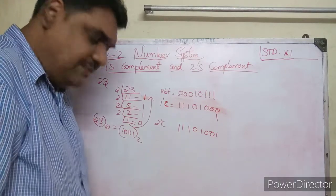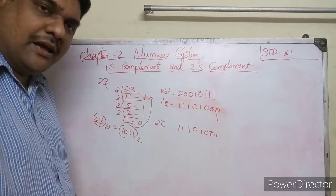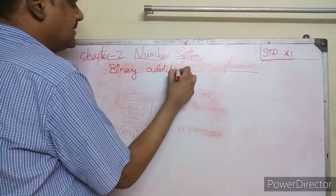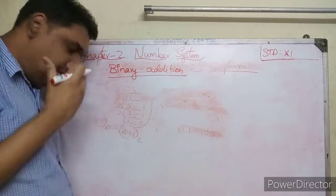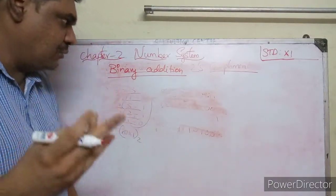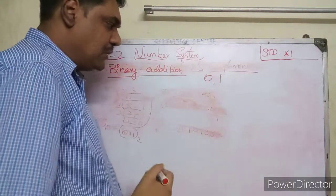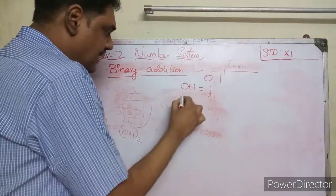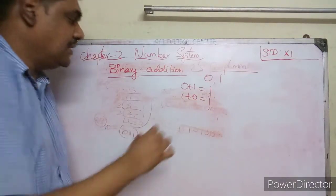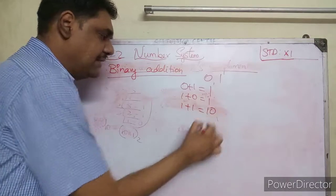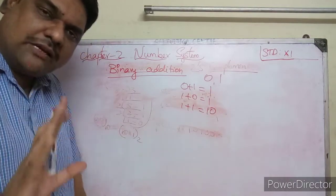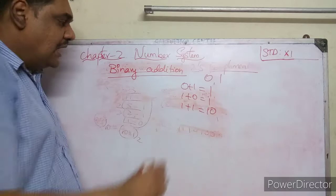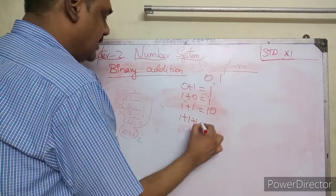Next, let's see binary addition. It's slightly different. In binary you have only two digits: zeros and ones. Zero plus one equals one, one plus zero equals one, one plus one equals ten (not two in binary addition).